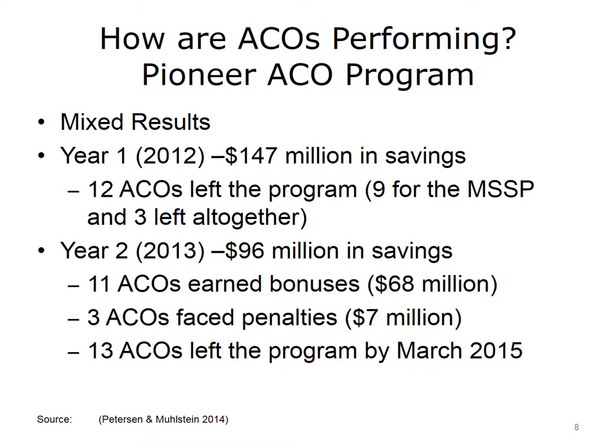There were also mixed results in the Pioneer ACO program. In this program, savings were generated and, in some cases, shared. In year one, the program generated $147 million in total program savings. In year two, $96 million in total program savings was generated, and 11 ACOs received bonuses. However, three of the ACOs faced penalties. In each year, Pioneer ACOs have left the program, most moving to the MSSP.